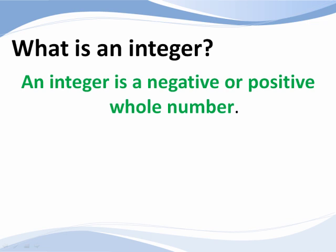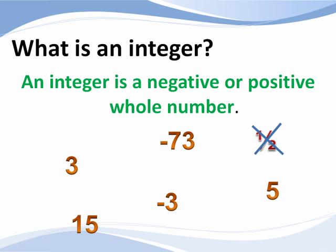An integer is a negative or positive whole number. Some examples are 3, negative 3, 5, 15, and negative 73. On the other hand, 1 half, pi, or 1 and 5 tenths are not integers.